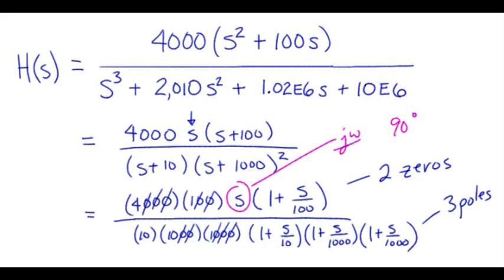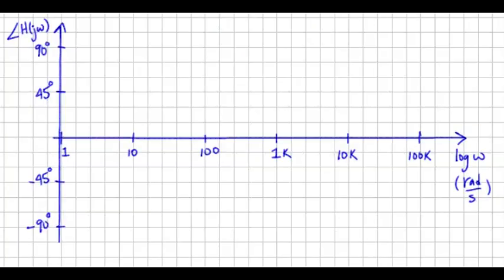Let's go ahead and take a look at the plot. I'll begin by putting in the plus 90 degree term for the zero at zero. Next the pole at 100 means we've got, sorry, zero at 100.